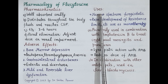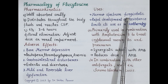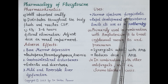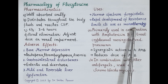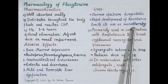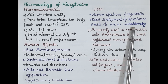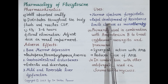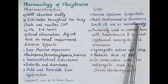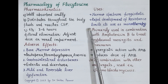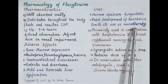Now let's discuss uses of flucytosine. Flucytosine is a narrow-spectrum fungistatic. It is not used as monotherapy due to rapid development of resistance, which significantly limits its use as a single agent. It is used only in combination with other antifungal drugs.